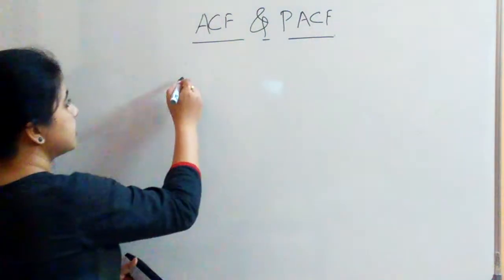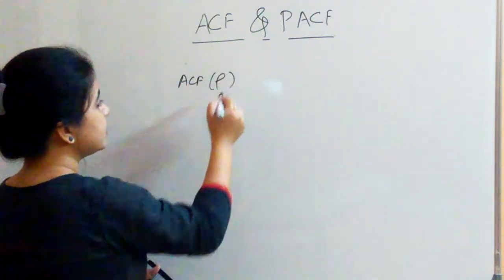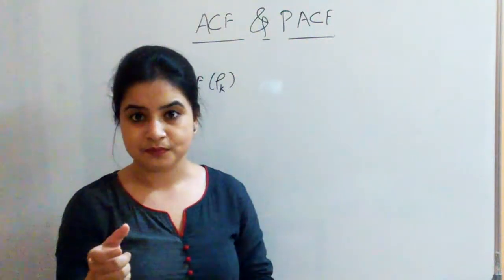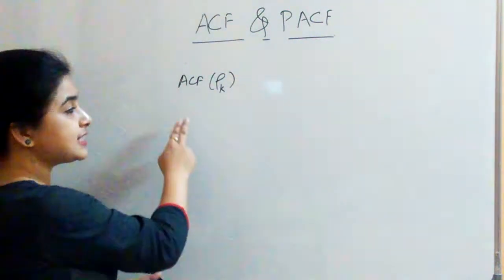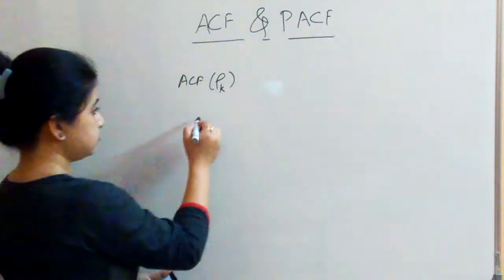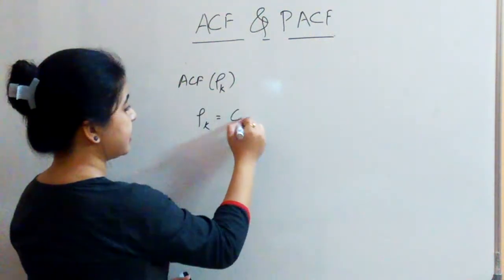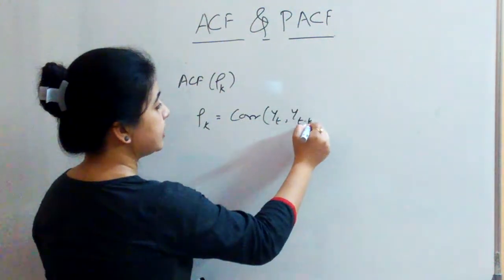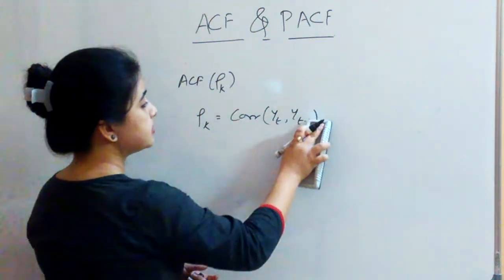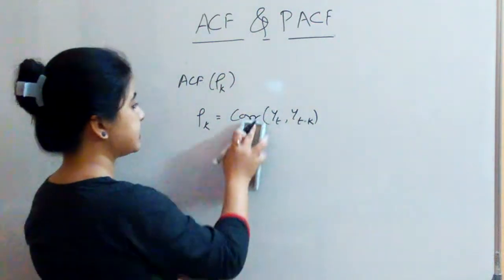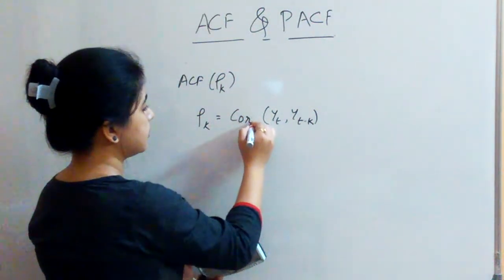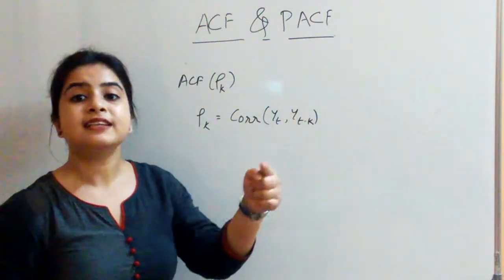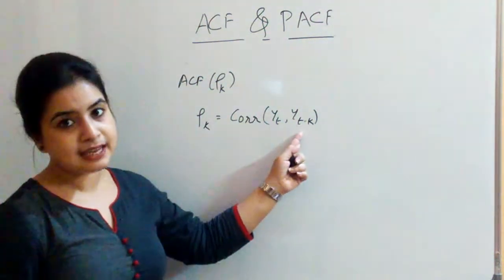The ACF, or rho-k, where k implies the lag length — rho-k is defined as the correlation between yt and yt-minus-k, where k is the kth lag term and k is the lag length.